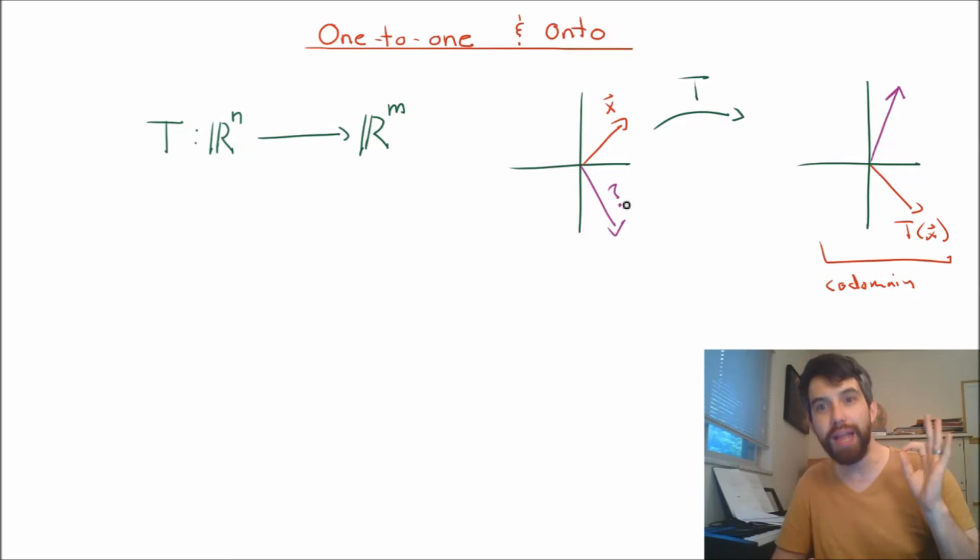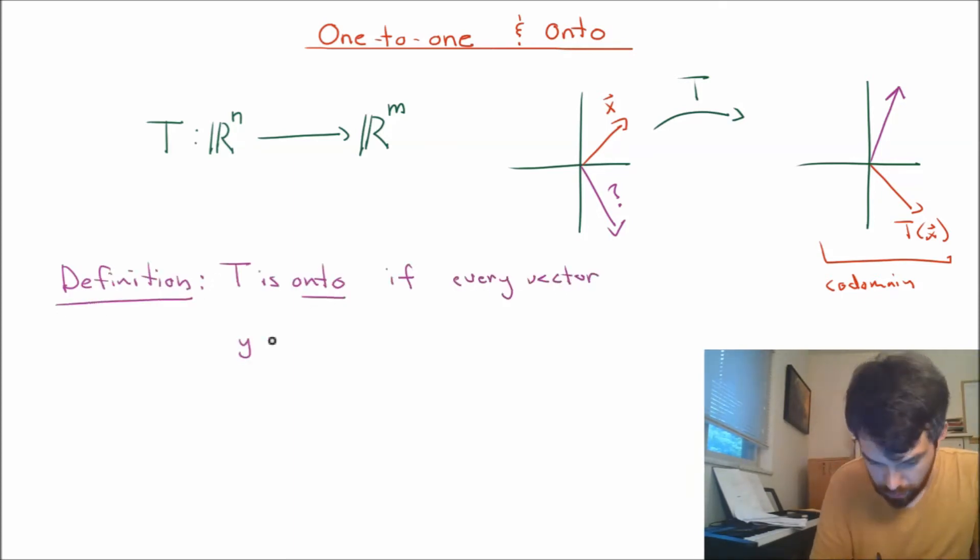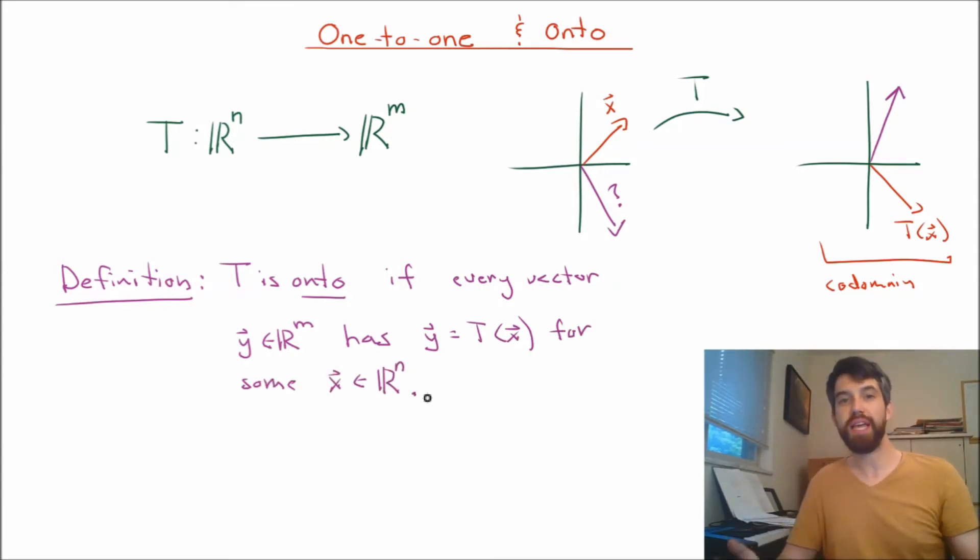We are going to define the notion of onto if every single thing in my codomain gets hit by something coming from the domain. Another way to say this is that for any y in my codomain, there is an x inside of my domain such that T(x) is just going to be y.